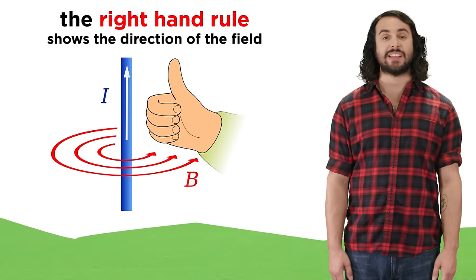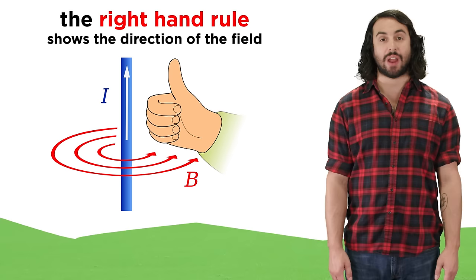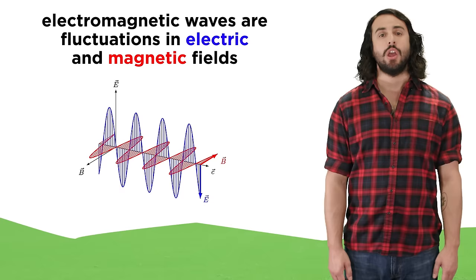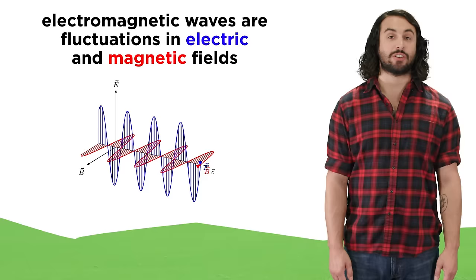We can use the right hand rule to show that if you grasp a current-carrying wire in your right hand with the thumb pointing in the direction of the current, your other fingers will wrap in the direction of the magnetic field that is generated by the current.